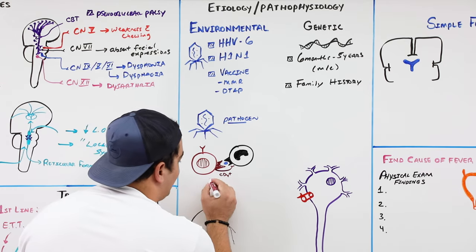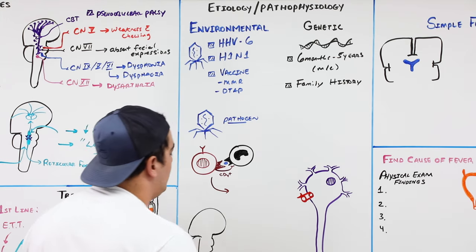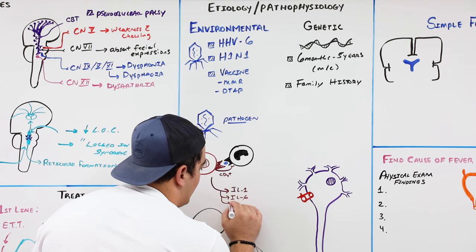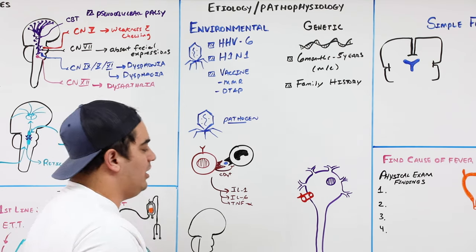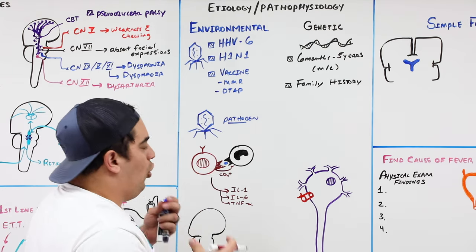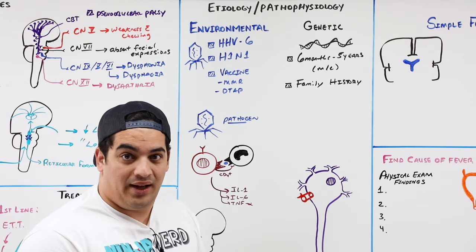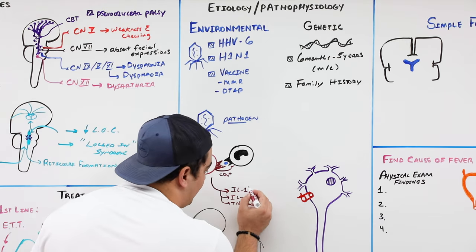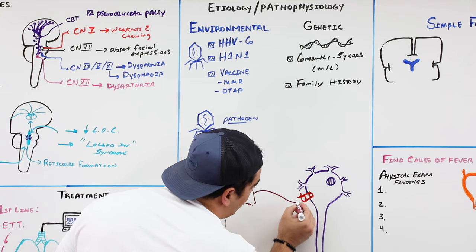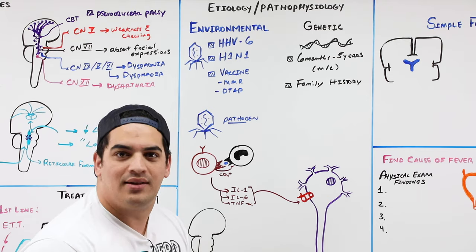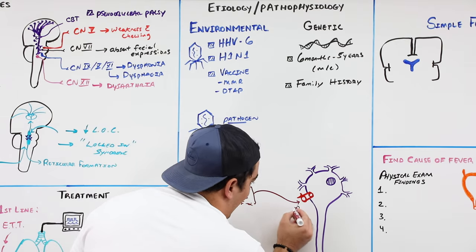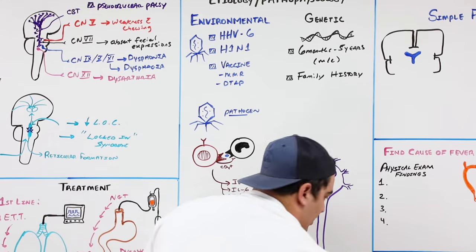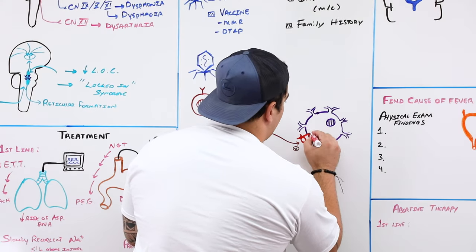The cytokines released include interleukin-1, interleukin-6, and tumor necrosis factor-alpha — these are the most prominent ones. When these cytokines are released, one of the most interesting effects is that they act on very specific receptors present on neurons, hyperactivating or increasing the sensitivity of those receptors.